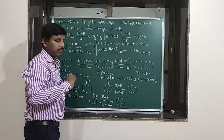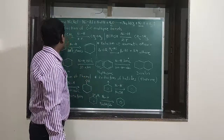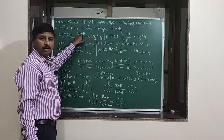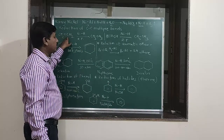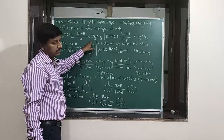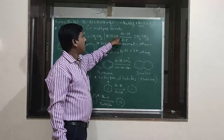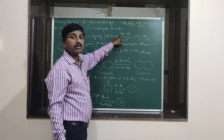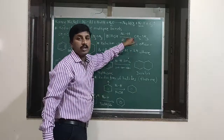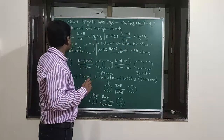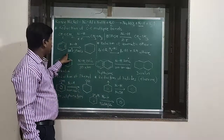The first application is the reduction of carbon-carbon multiple bonds. Alkene C=C double bonds, when treated with Raney Nickel, undergo catalytic hydrogenation at room temperature. Hydrogen adds across the double bond and we get the corresponding alkane. Similarly, acetylene — a C≡C triple bond — when treated with Raney Nickel at room temperature, undergoes reduction to give ethane.